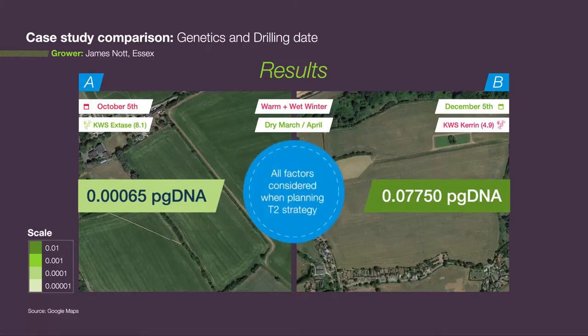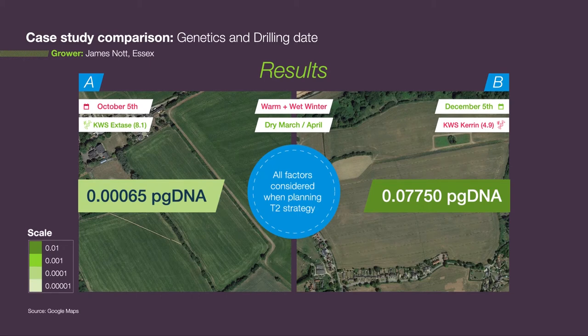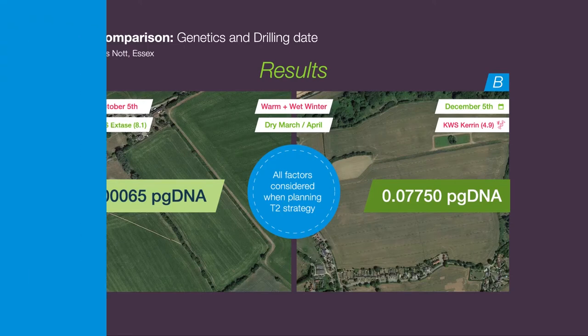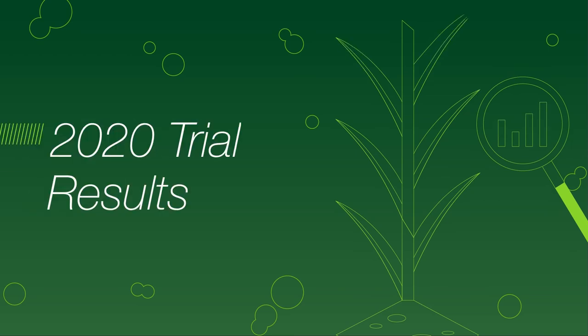Whilst we would not expect James to base his T2 decision wholly on this result, it has given him an extra layer of information which he has been able to use alongside other important factors on his farm, including local weather forecasts, to better inform and justify his fungicide choices. Alongside working with growers, we have also been using this technology across the country on a range of trials.